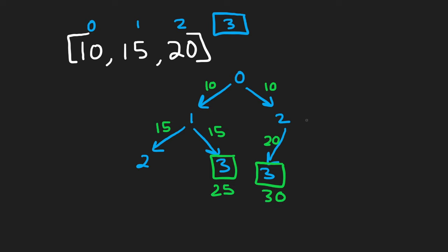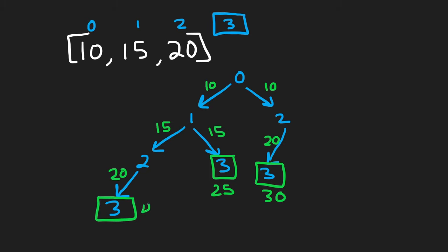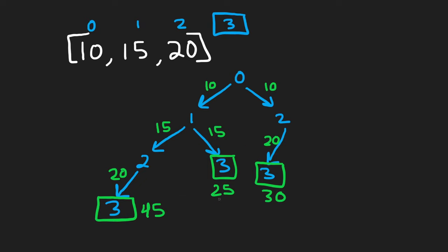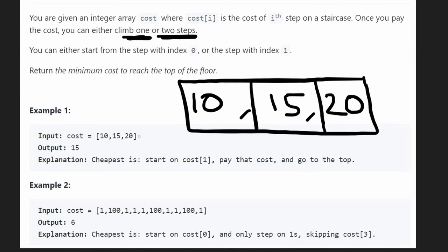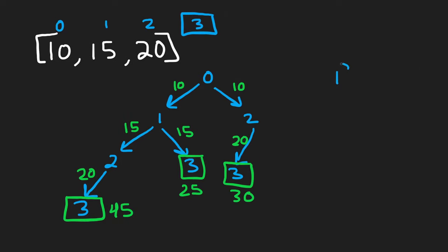There were three different ways to reach the goal, with a minimum of 25. But the actual answer is 15. Why? Because we were allowed to start at index 0 or index 1, but in this decision tree we only started at index 0. So don't we need to draw another entire decision tree starting at index 1? If you look closely, starting from index 1 is already embedded in the current tree — we just need to reuse that subtree and adjust the costs.